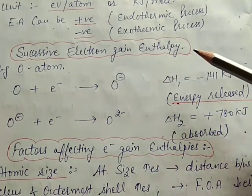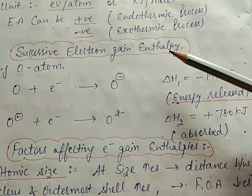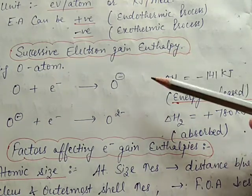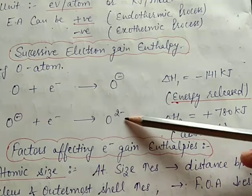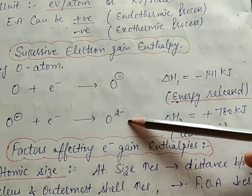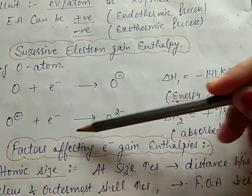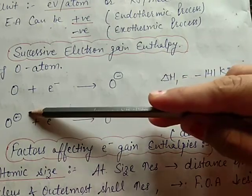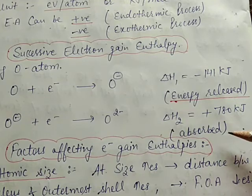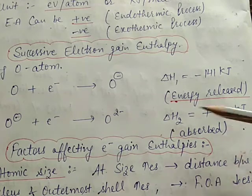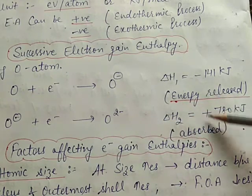Next is successive electron gain enthalpy — the enthalpy change occurring when the second, third, and so on electrons are added to the uninegative ions. This is called the second electron gain enthalpy. When an electron is added to a negative ion, there is repulsion between the electrons and the negative charge. To overcome this repulsion, energy has to be supplied.